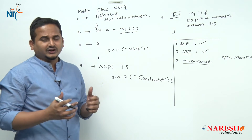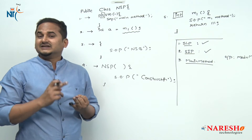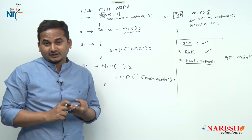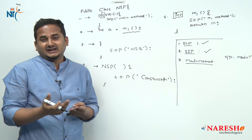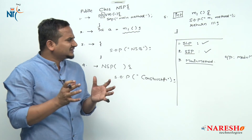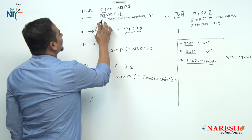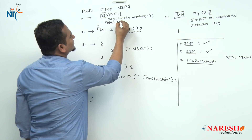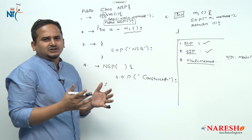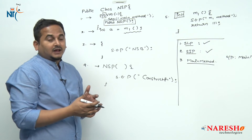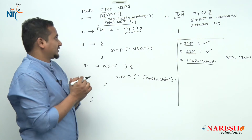So how can we create an object? In Java, there are different ways to create an object: the first is the new keyword; the second is the newInstance() method; the third is a factory method, which has two types — static factory method and non-static factory method; the fourth is deserialization; and the fifth is cloning. For these fundamental videos, I am going to use the new operator. After the SOP, I am writing "new NSP" — this is the object creation statement.